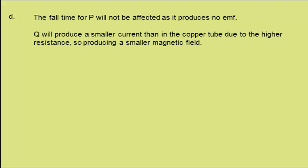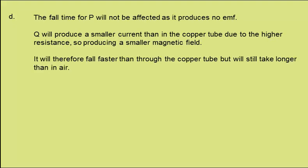In D, the copper tube is replaced by a tube of the same dimensions, but made from brass, with a higher resistivity than copper. We're to describe and explain how, if at all, the times taken by P and Q to pass through the tube would be affected. Well, the fall time for P will not be affected as it produces no EMF in either tube. Q will produce a smaller current than in the copper tube due to the higher resistance. Therefore, this will produce a smaller magnetic field. It will therefore fall faster than through the copper tube, but it will still take longer than falling through air.